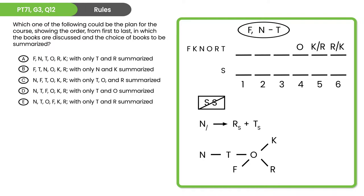Here's the first question. Hit pause and see if you can find the right answer. Welcome back. This is a rules question — the first question of the set. We take the rules and apply them one at a time, knock out the wrong answer choices, and choose the last remaining choice. We've got four rules and four wrong answers — it's usually one-to-one. We're just going to work our way through those rules.